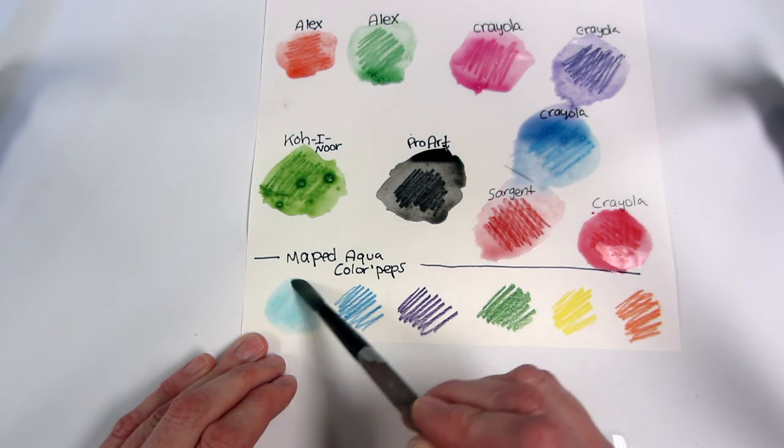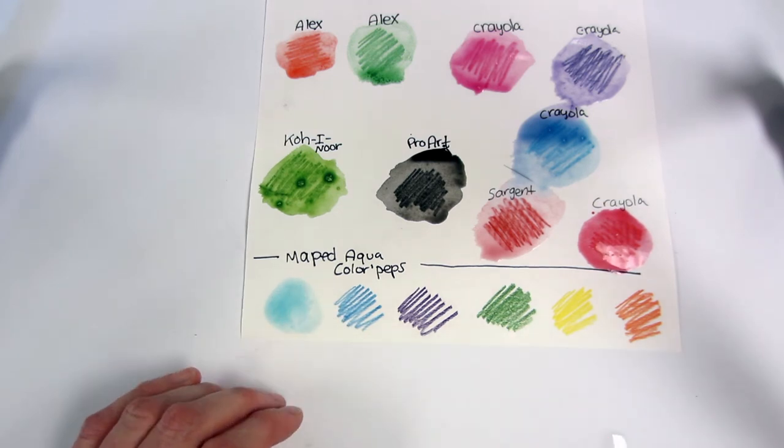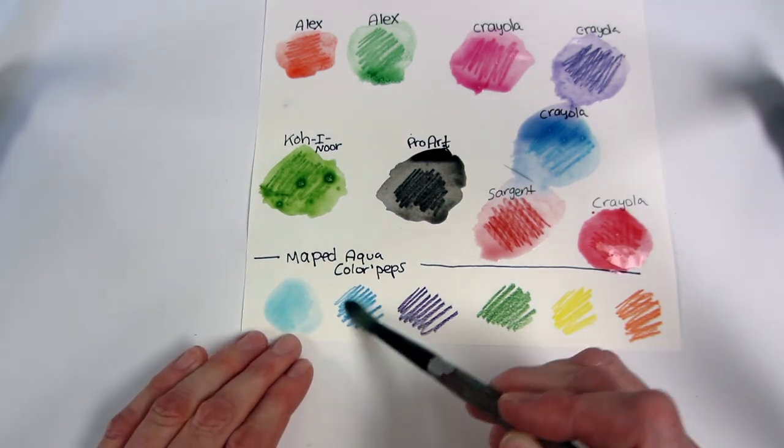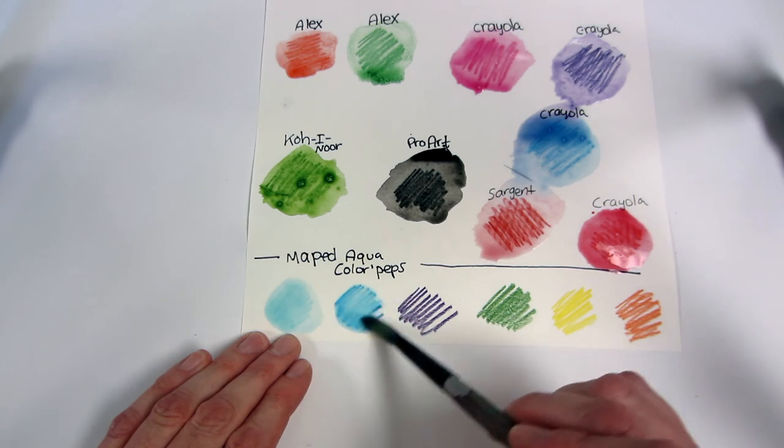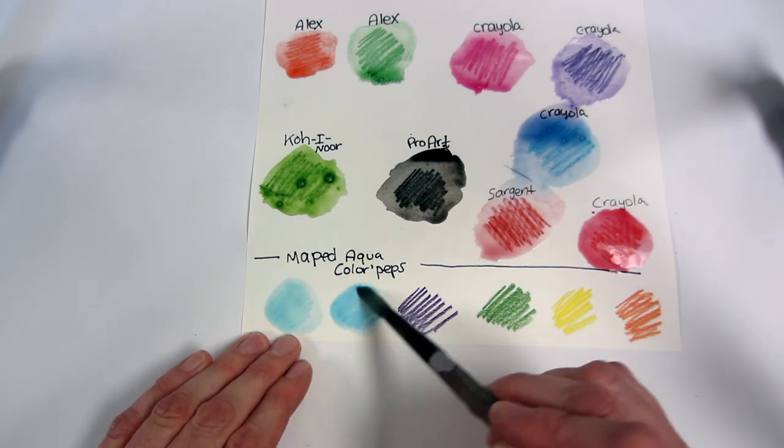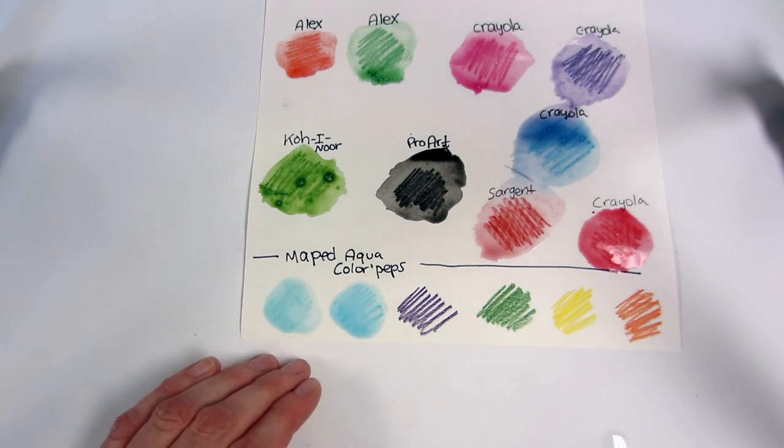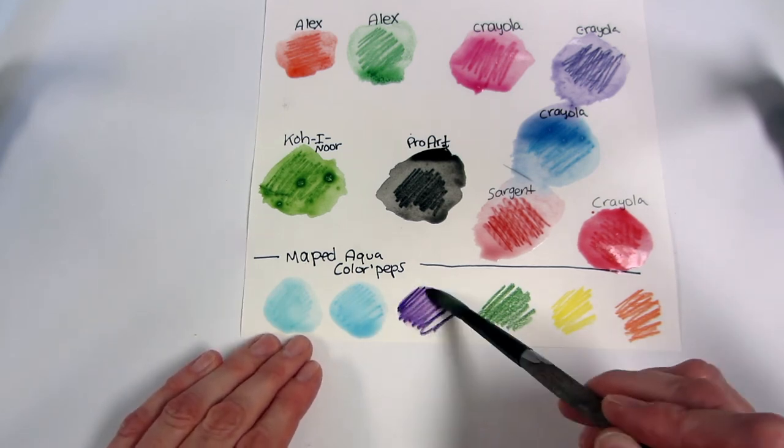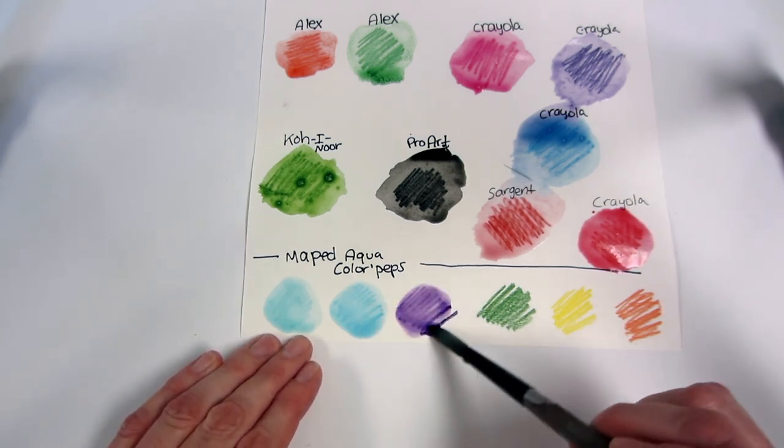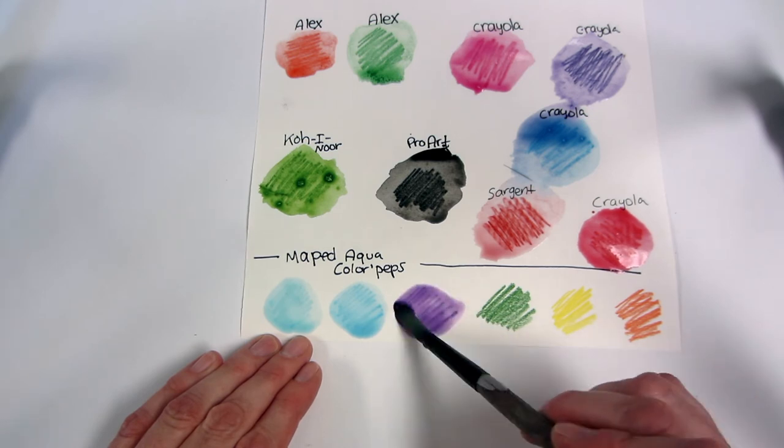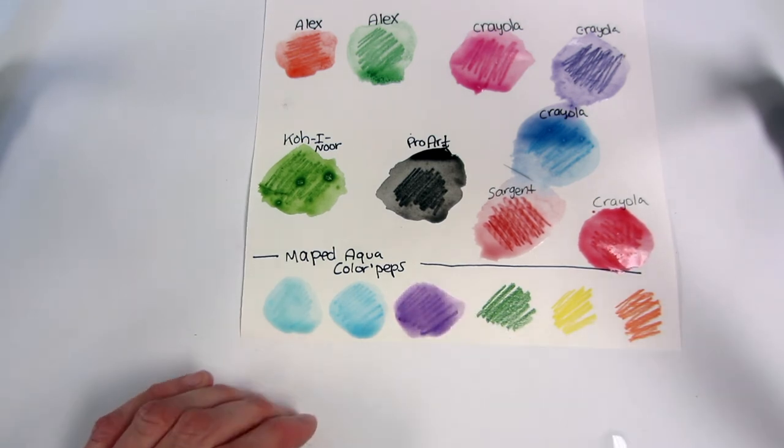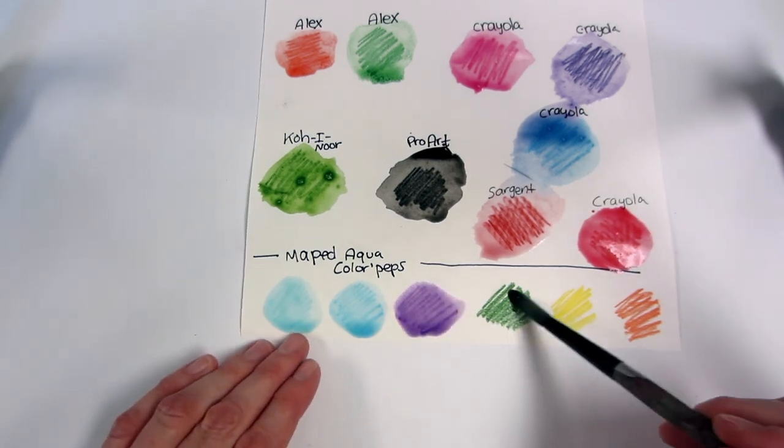The Mayped colors are on the bottom row. I think they blend pretty nicely, and they are more affordable for an elementary classroom. They are really fun to play with, and the kids like watercolor pencils. Out of the different types of watercolor pencils I have, I like these Mayped ones the best, and I think they blend the smoothest.